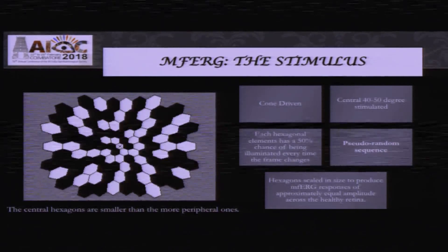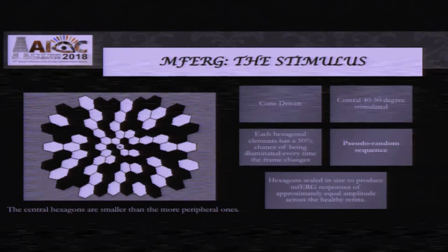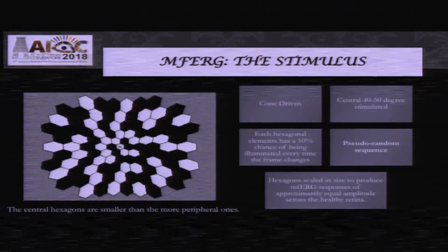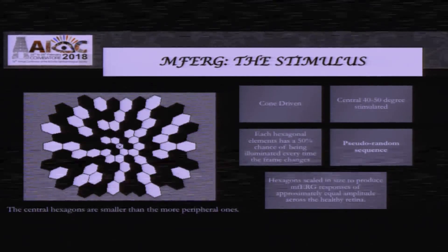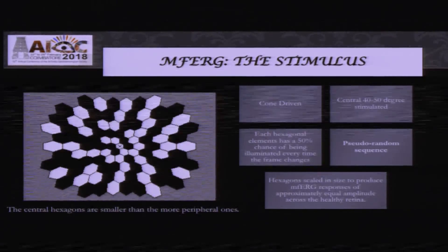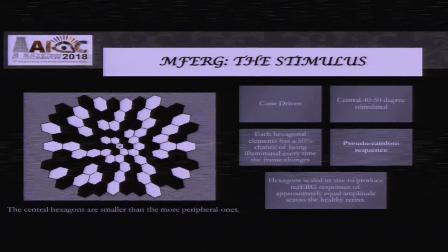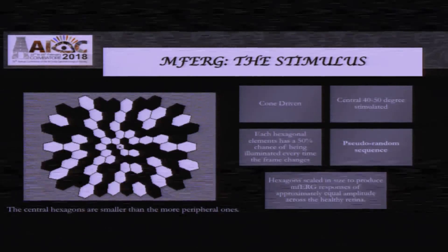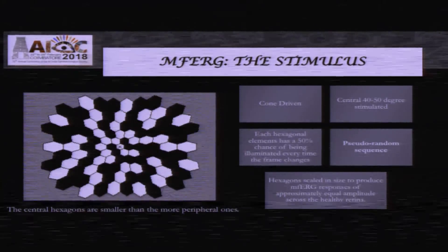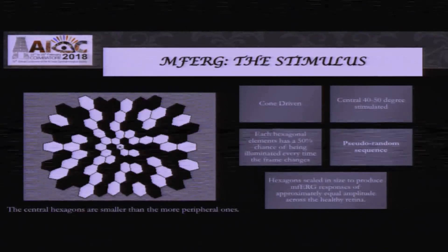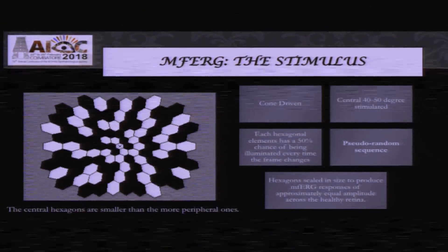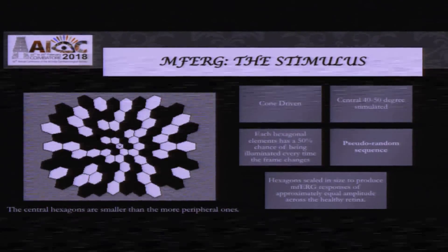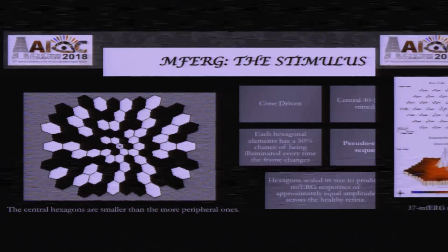This is the typical stimulus used for multifocal ERG. It has a pattern of hexagons spread up to 40 to 50 degrees of the retinal field. The size of the hexagons is different — the central hexagons are smaller and the peripheral hexagons are larger. This is done to ensure that the same number of cones are stimulated in each hexagon, as the density of cones is much higher in the central area compared to the peripheral area.